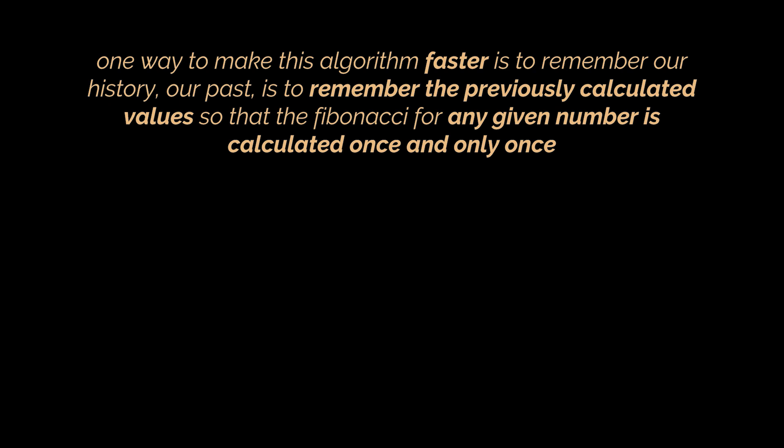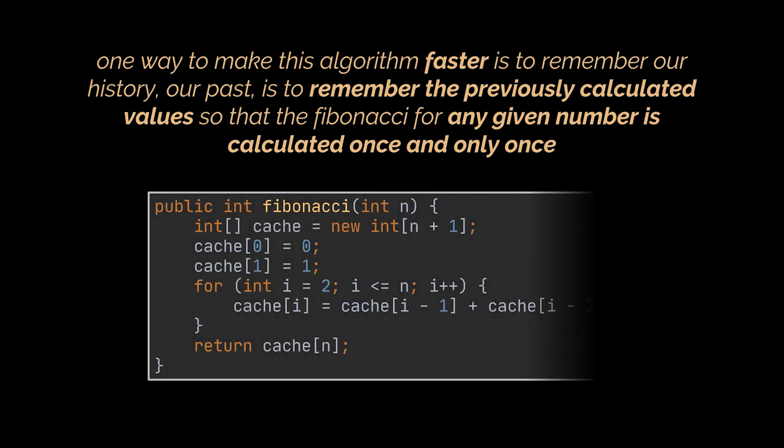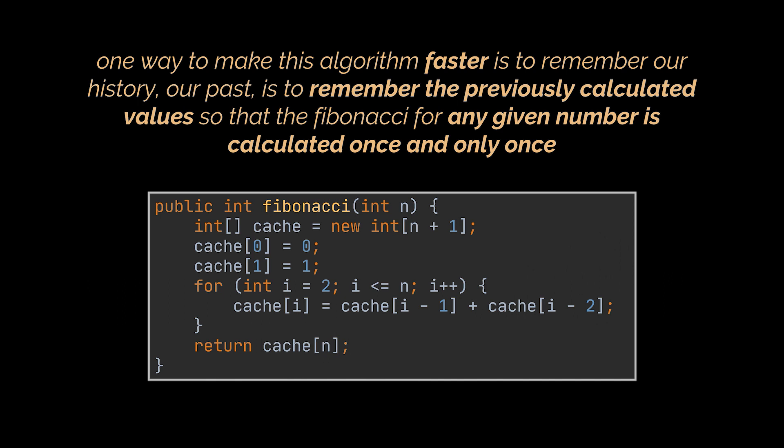One way to make this algorithm faster and optimize our current method is to remember our history — our past. It's to remember the previously calculated values so that the Fibonacci for any given number is calculated only once. The simplest way to do that is to create an array and store inside it the intermediate values needed to calculate the targeted Fibonacci.